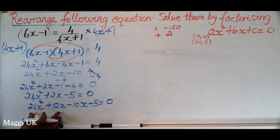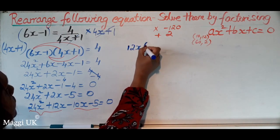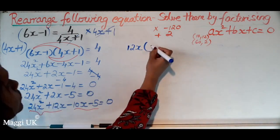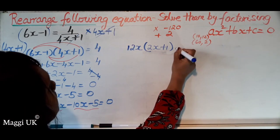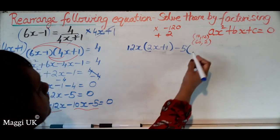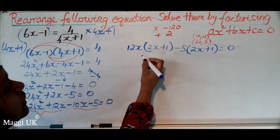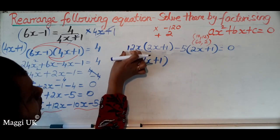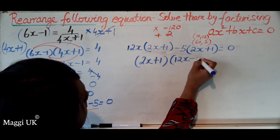Now we factor by grouping. From the first two terms, take out 12x: 12x(2x plus 1). From the last two terms, take out minus 5: minus 5(2x plus 1). Both groups share the factor (2x plus 1), so we get (2x plus 1)(12x minus 5) equals 0.